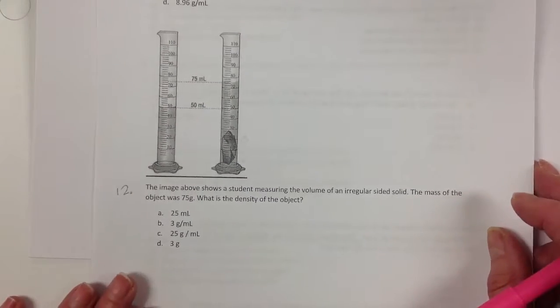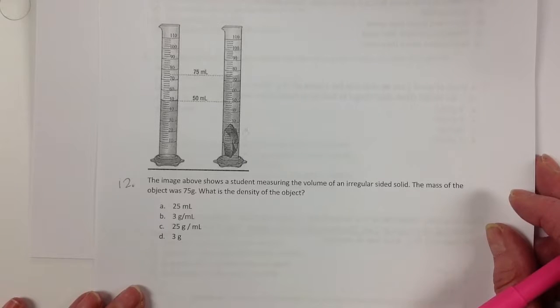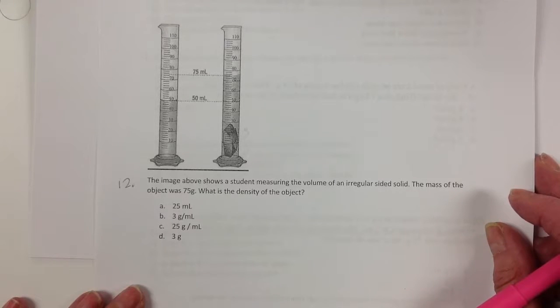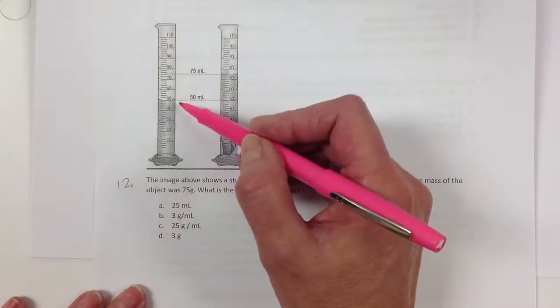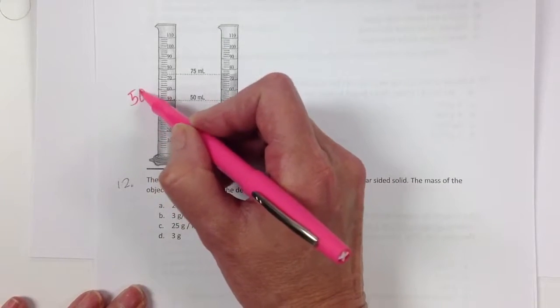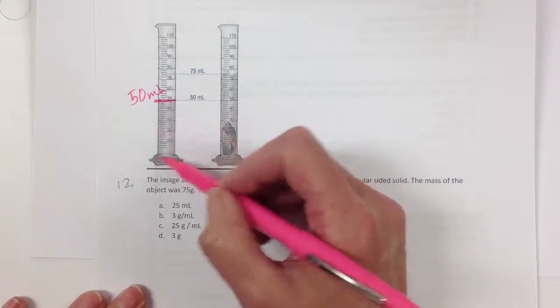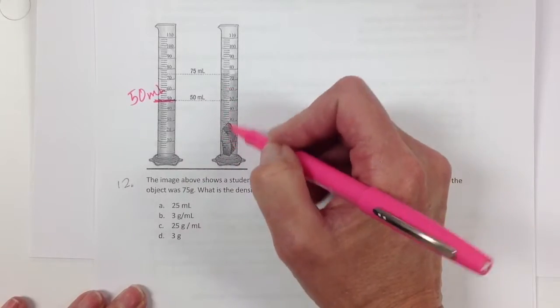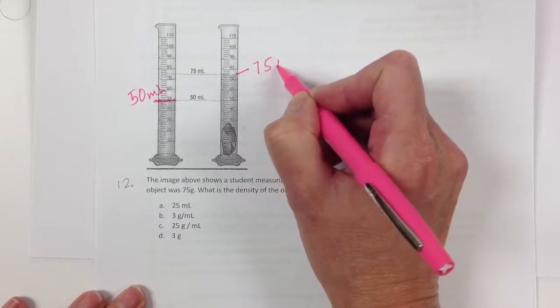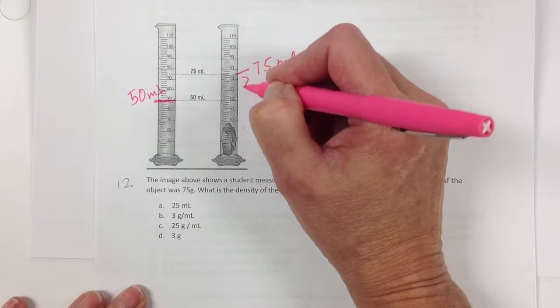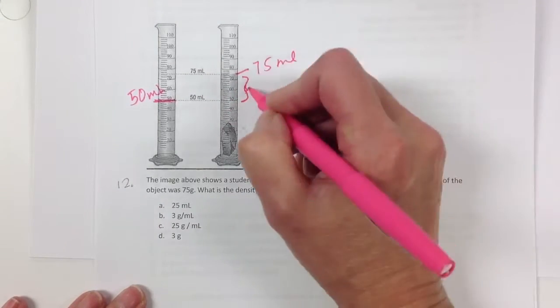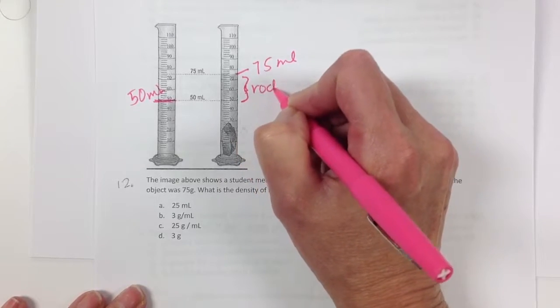So you may or may not see a question that asks you to look at calculating the volume using the displacement method like here. So remember we had initially 50 milliliters of water in the graduated cylinder. No rock in it. But then we threw the rock in it and it ended up at 75 milliliters. Okay. So that difference here, this right here, from 50 to 75 is the rock's volume.